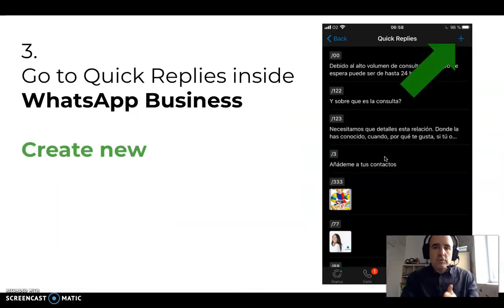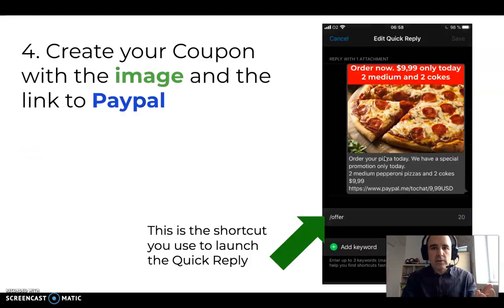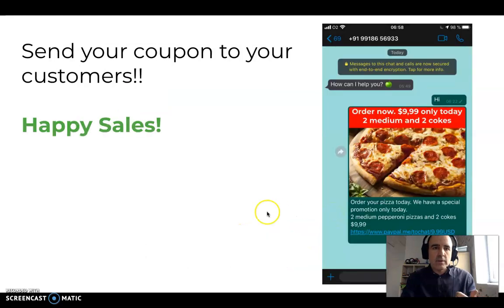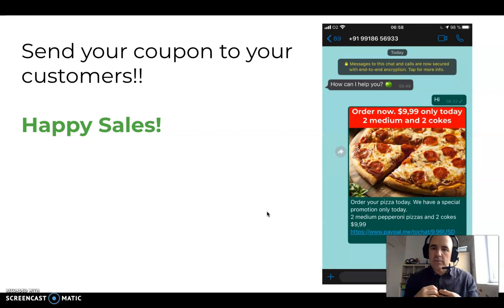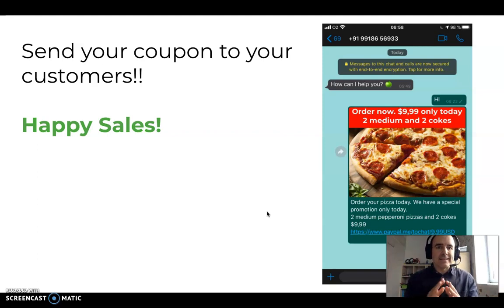Then you go to WhatsApp, go to quick replies, and create a new one. You add the content, the image — as we saw in the video — and you create the shortcut. The shortcut is going to enable anyone using WhatsApp to send the promotion. They don't need to type, they don't need to do anything. You have a new customer, you send a coupon — that's it. Super simple, super easy to use.